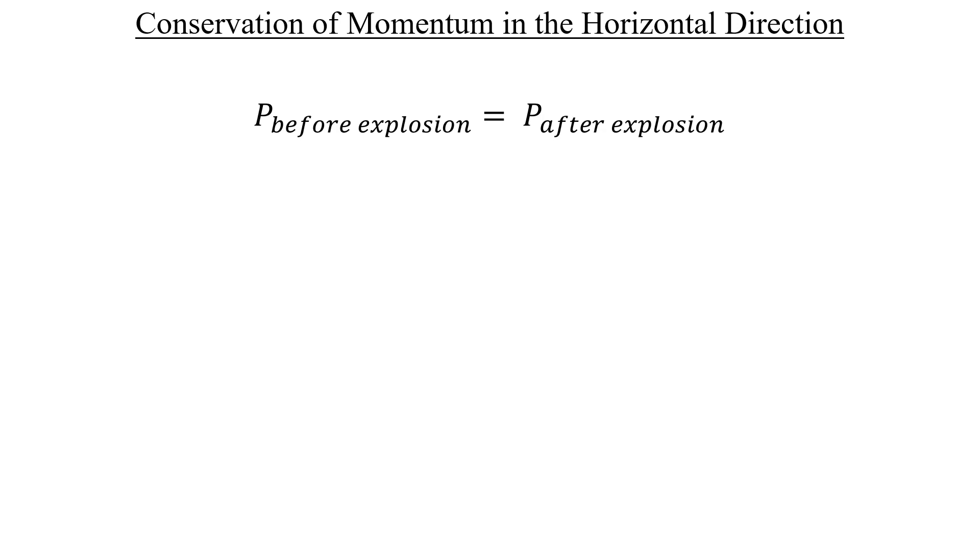Then immediately following the explosion, we have the momenta of each leftover rocket chunk on the right. I'm going to move the momentum of A over to the left-hand side and then solve for the velocity of A by dividing both sides by A's mass.